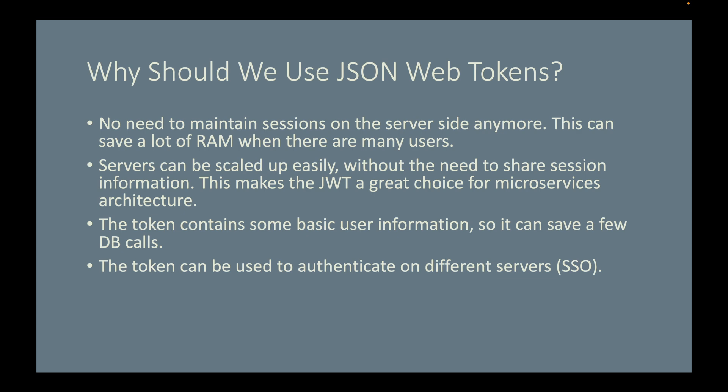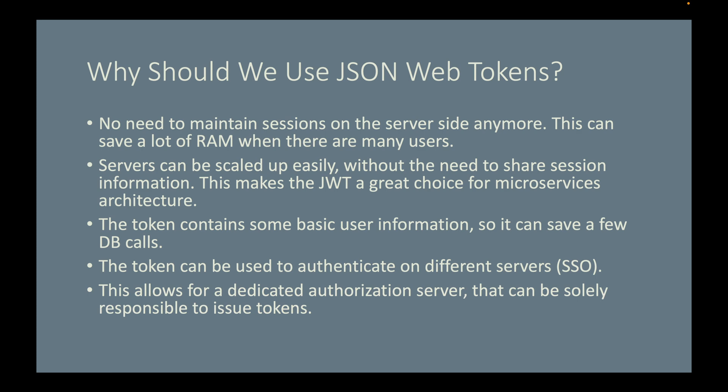So if a user logs in on a Spring Boot server and gets a JSESSIONID in a cookie, it will be useless on a Python server because Python cannot recognize JSESSIONID. JWT, on the other hand, is language-neutral — it can be used across different languages and frameworks, allowing JWT to implement single sign-on (SSO). Last but not least, JWT allows for a dedicated authorization server solely responsible for issuing tokens, which is a very common practice in modern enterprise applications.